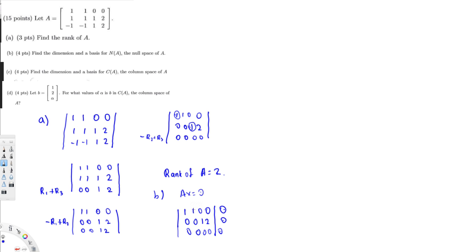First I recognize the free variables. x1 and x3 have leading coefficients. Labeling the variables x1, x2, x3, x4 — x2 is a free variable because its column has no leading coefficient. x4 is also a free variable for the same reason. I have to write everything in terms of the free variables; the final answer should be expressed in terms of free variables.